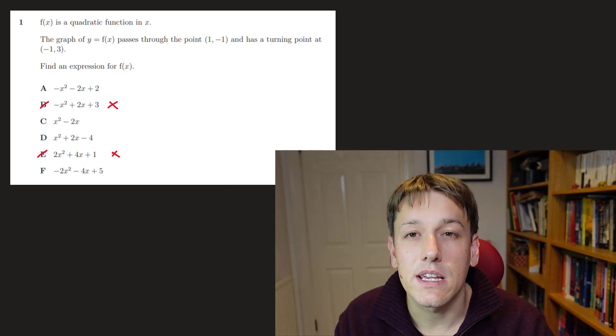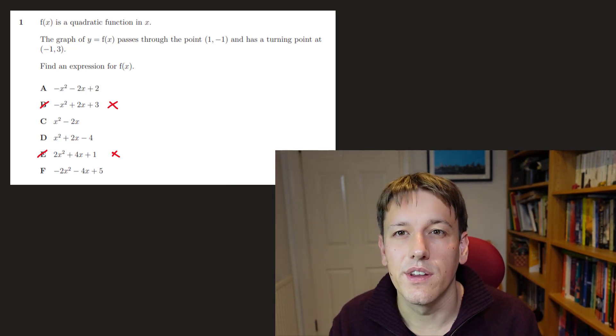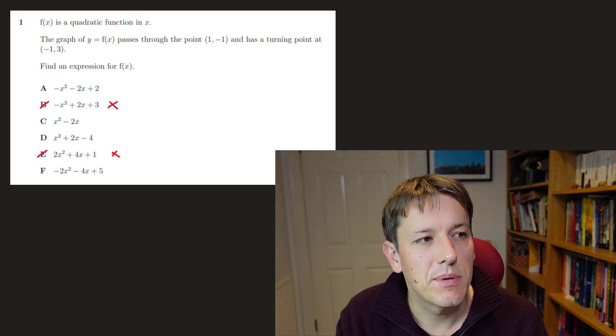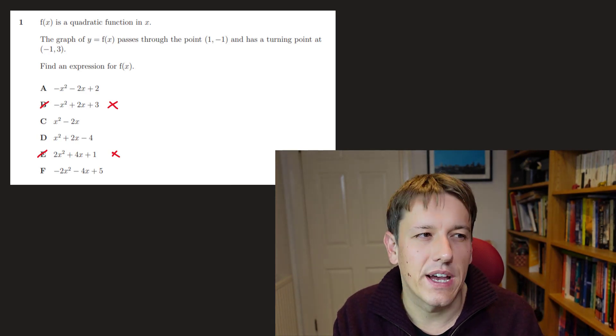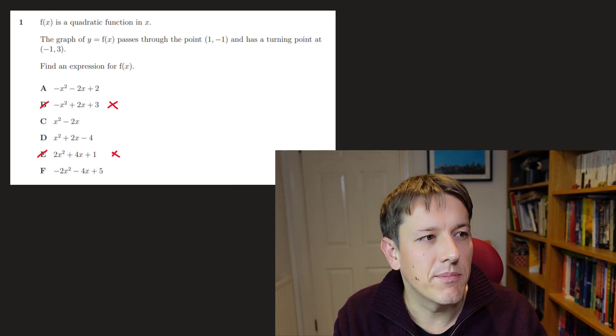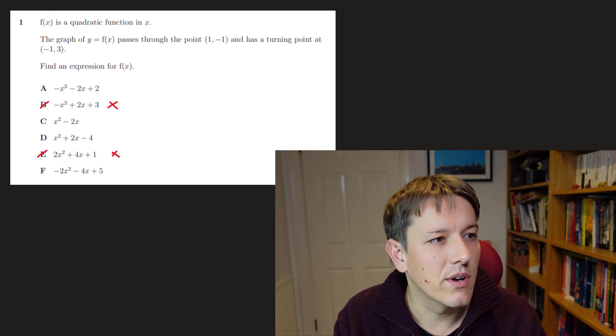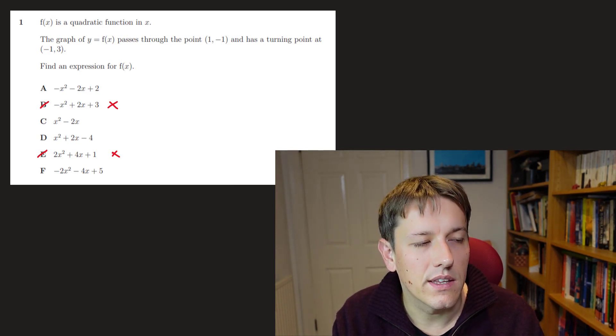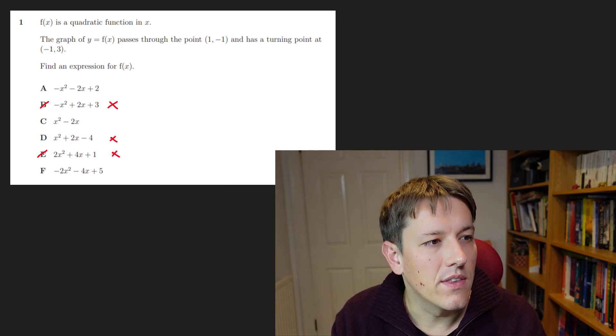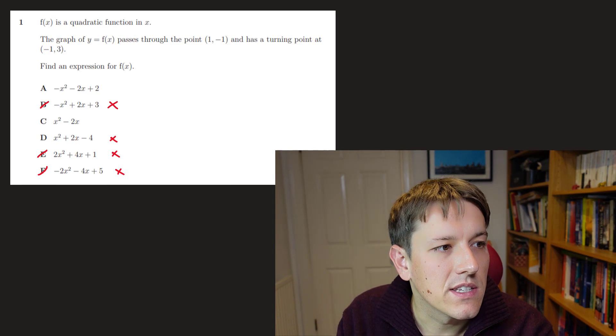It's got a turning point at (-1, 3). So that means when I substitute in -1, I get 3. Let's forget the fact that it's a turning point for a second, just the fact that it's on the curve. So if I put -1 into the first one, you've got to be a bit careful with the squares here. So that's -1 plus 2 plus 2, that's 3. OK, great, that works. C is going to be 1, that's 1 plus 2, that's 3. D is going to be 1 minus 2 minus 4, so that one is not 3. And F is going to be -2 plus 4 plus 5, so that one doesn't work. So we've eliminated two more.